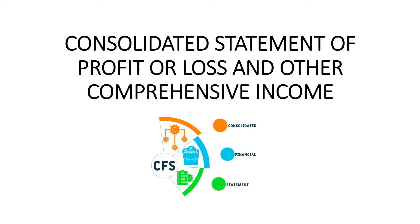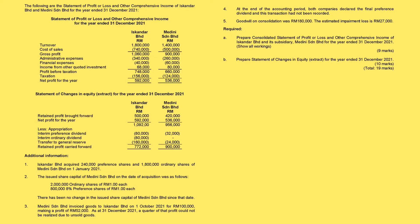Consolidated Statement of Profit and Loss and Other Comprehensive Income. Now we look at the additional information number 5 with regard to the goodwill.